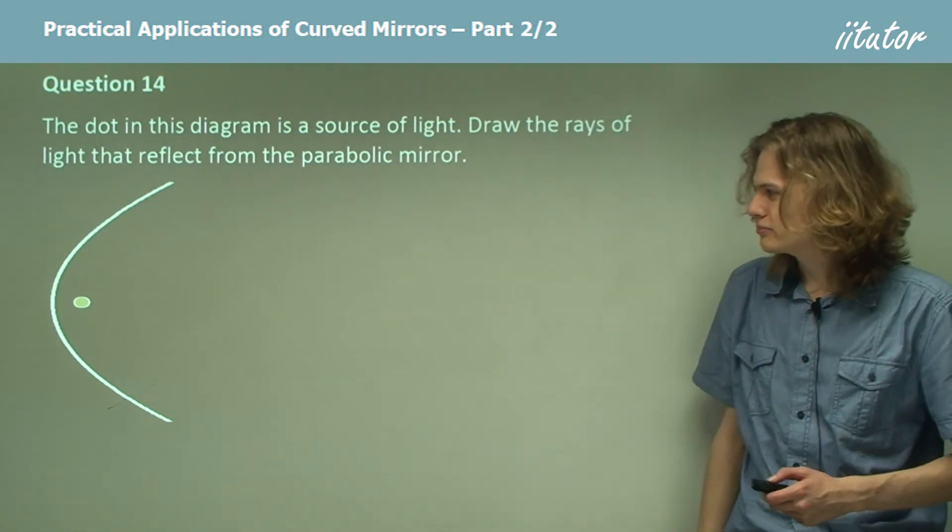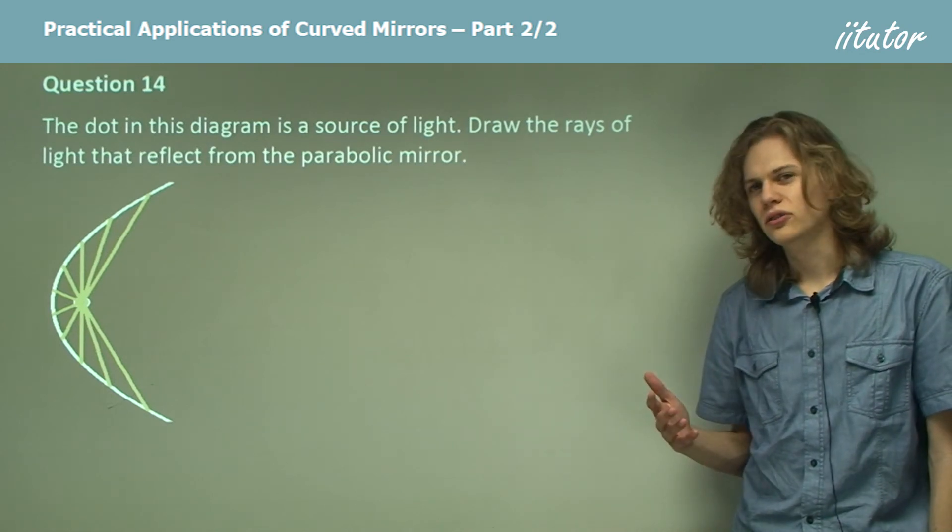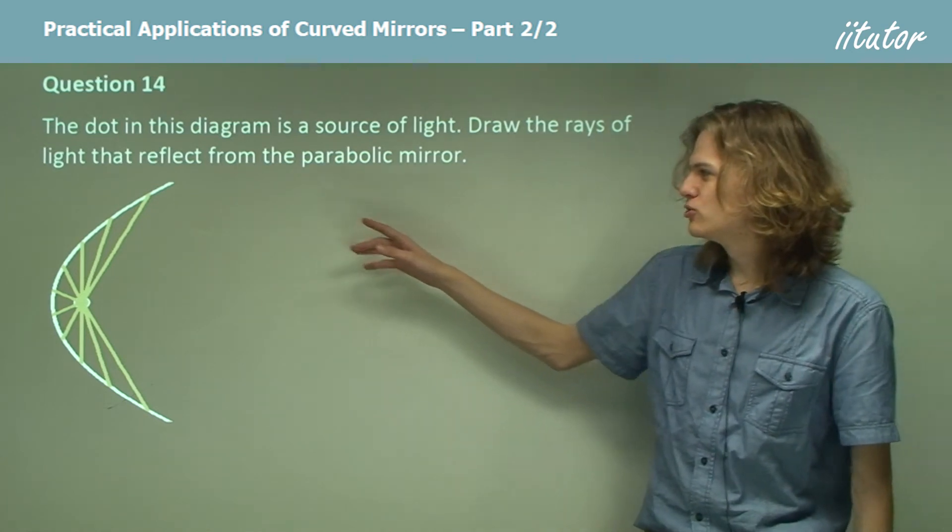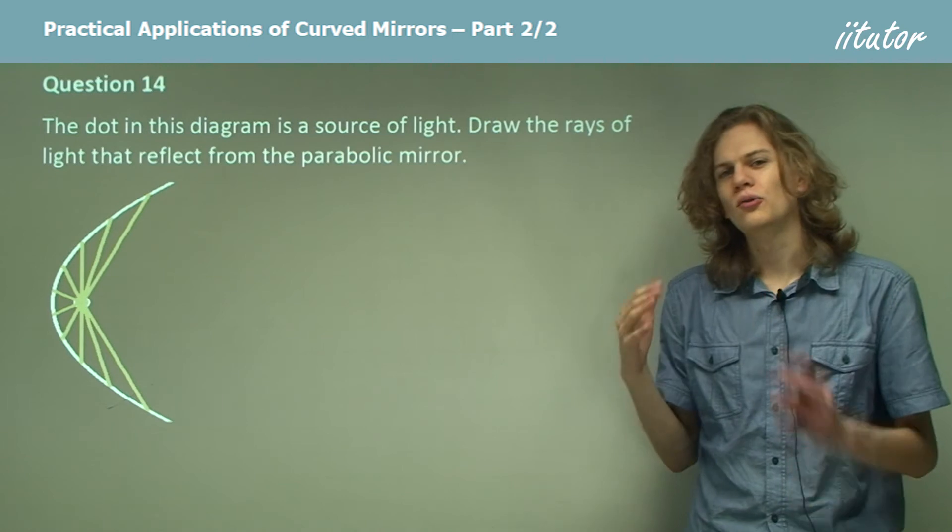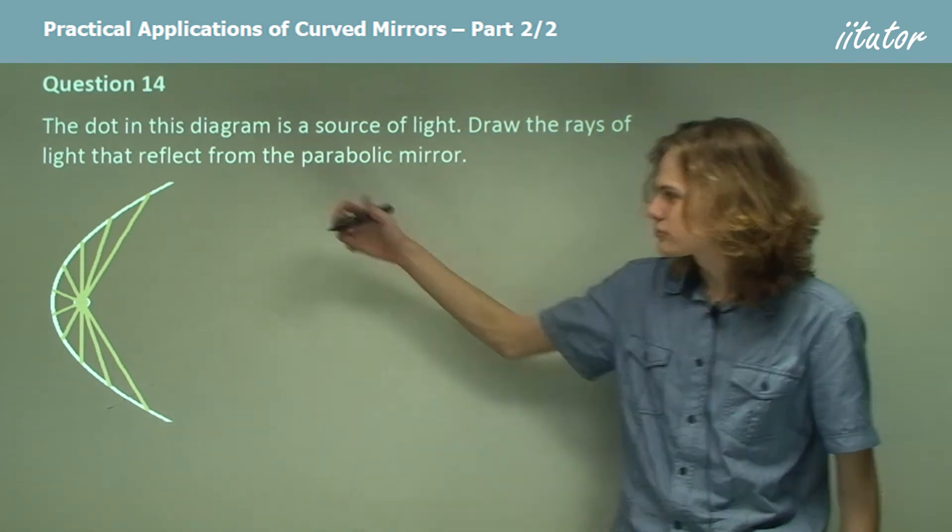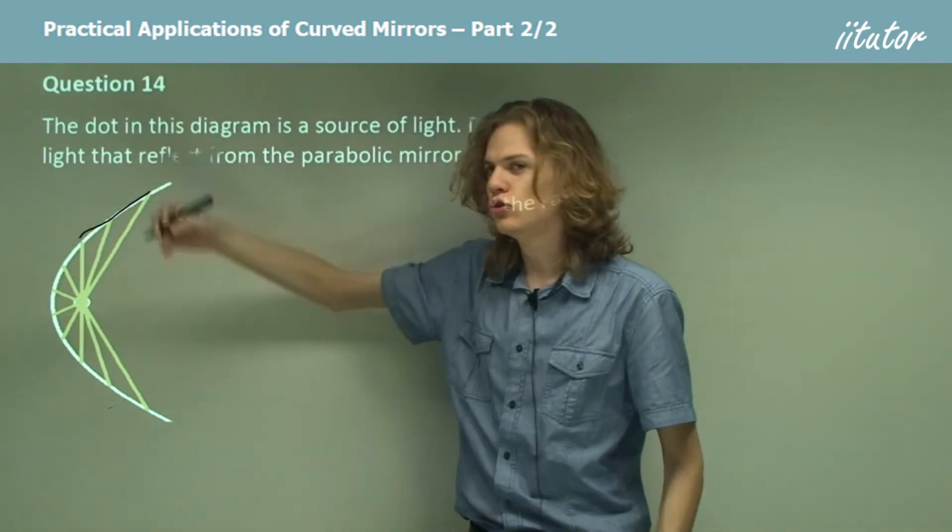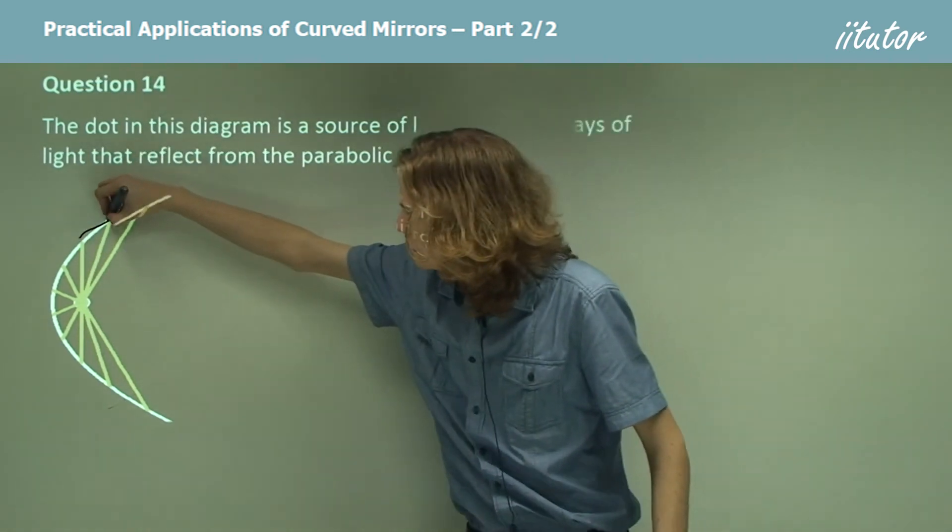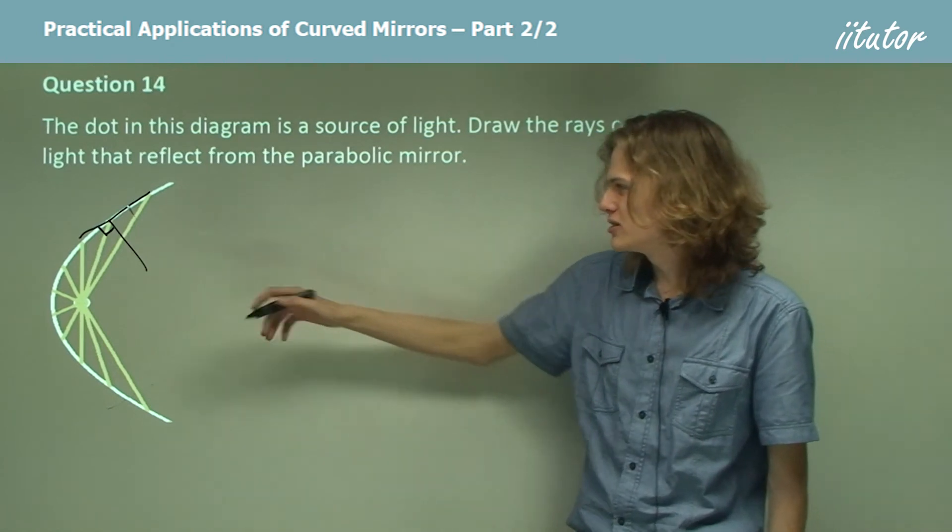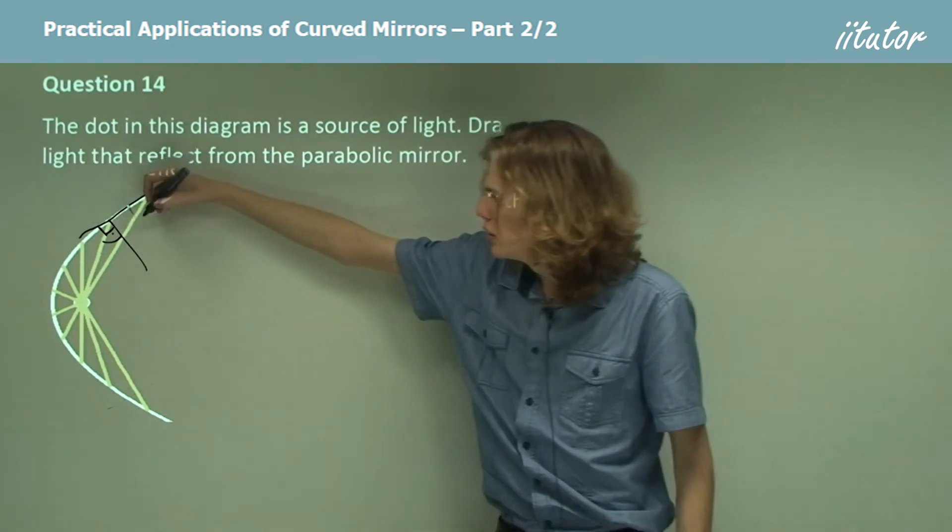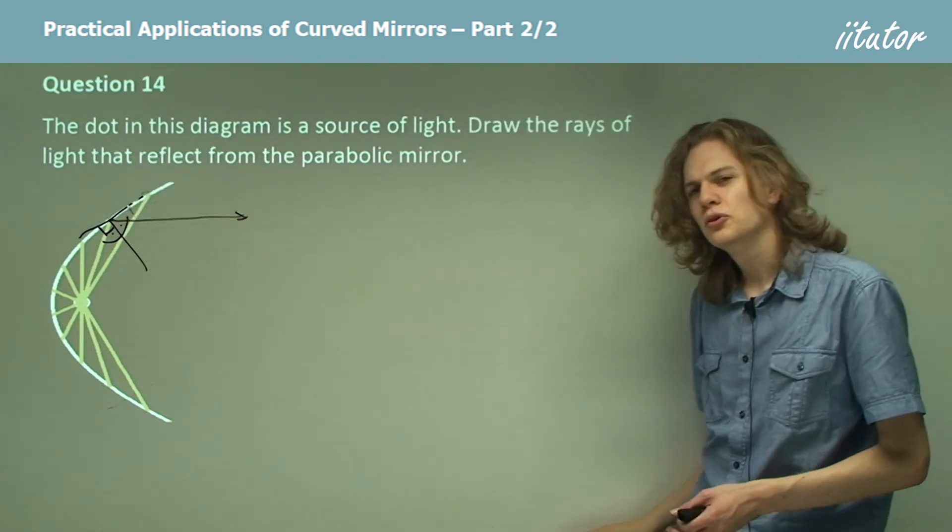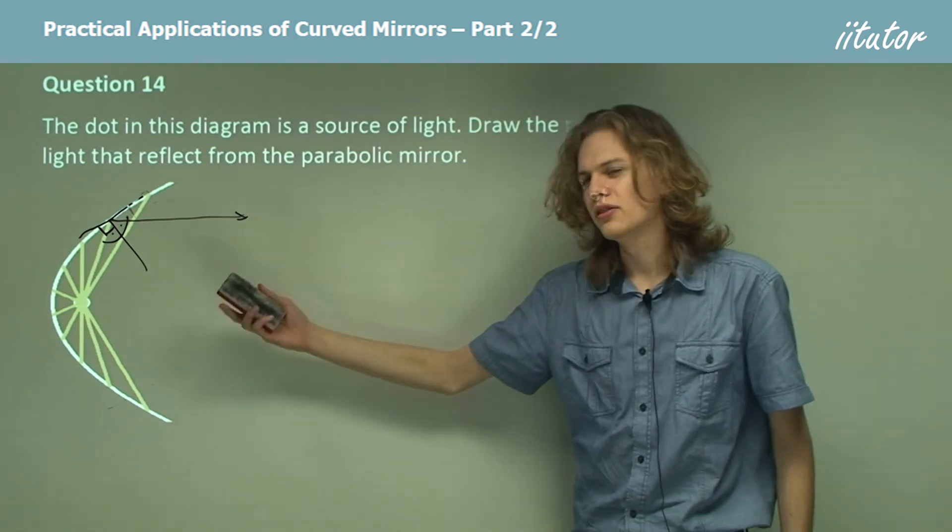So that might look something like this. Now there are two different ways from here that we can go to solve this question. The first way we can solve it is by carefully drawing normals to each point where the light rays that we've drawn strike the parabolic mirror. And so in that case, we'd be drawing a normal to the circle, a normal to the curve at each point. And the normal will of course be perpendicular to the mirror. And then measuring the angle of incidence and making sure it's equal to the angle of reflection, which will look something like that.